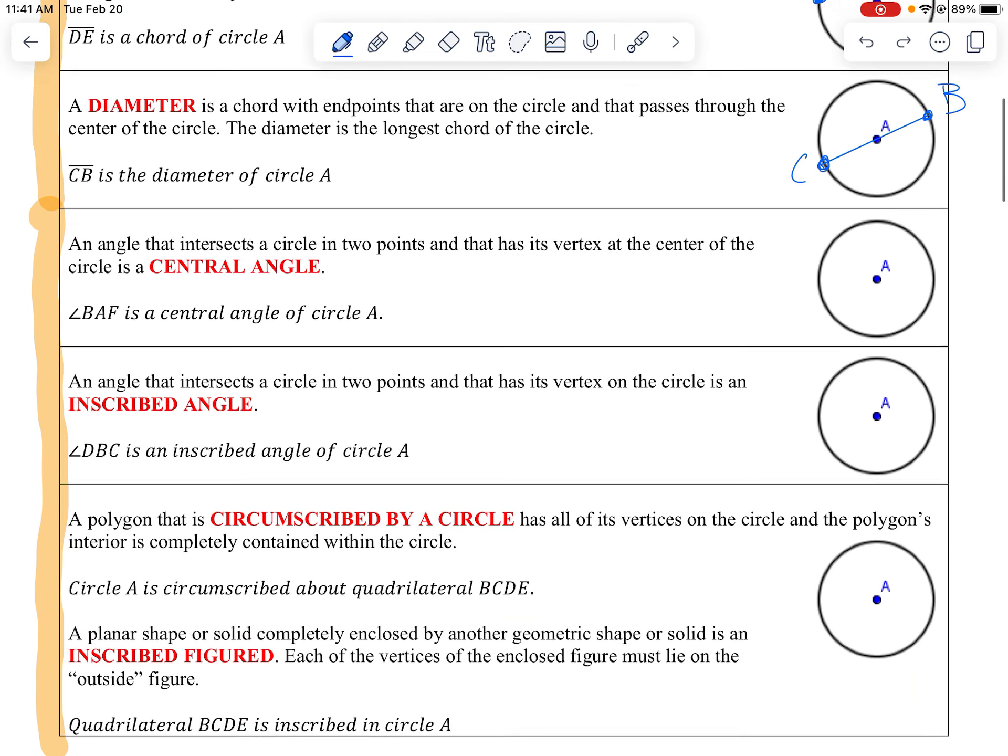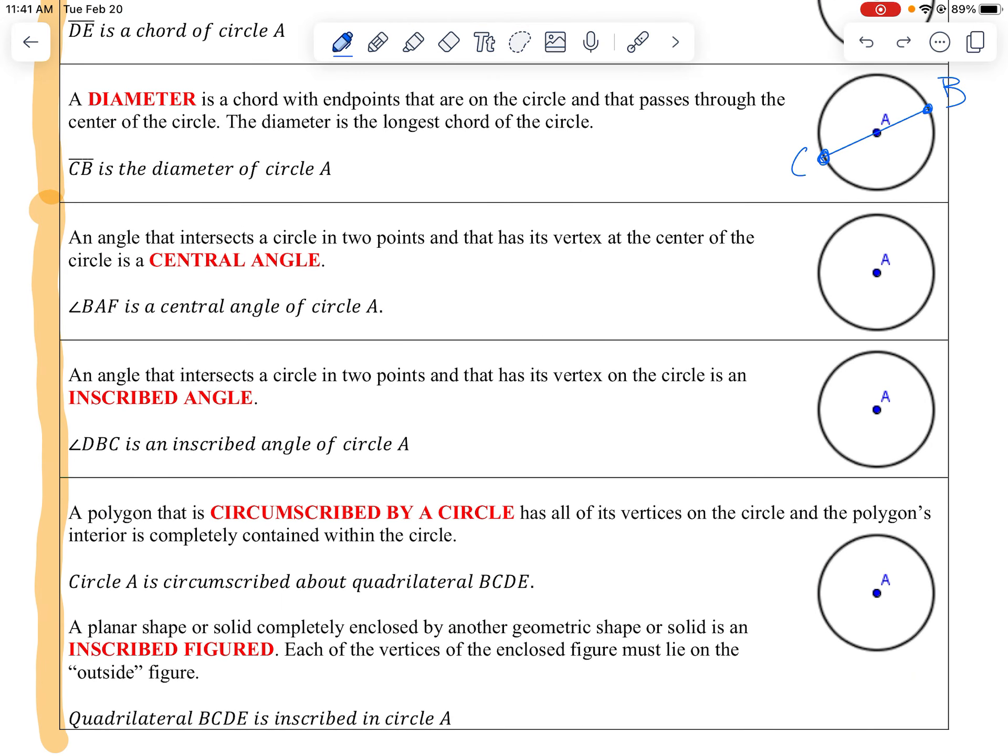Next thing, an angle that intersects the circle at two points and has a vertex at the center is called a central angle. So if I just draw some lines out like this, put a label, this one is B, this one F, because I want to name this angle BAF, that's angle BAF, B to A to F. This is called a central angle because the vertex is at the center.